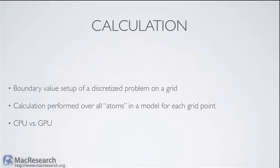For every grid point, we're calculating a value over all atoms in our model. I put 'atoms' in quotes because what we're talking about conceptually is applicable to all kinds of problems — even if you don't deal with biological molecules but work with particle-type problems or grids. In this calculation, we'll also show performance comparisons between the CPU and GPU.